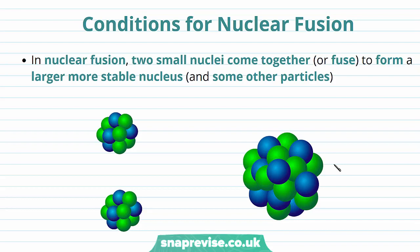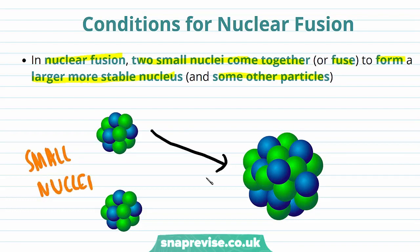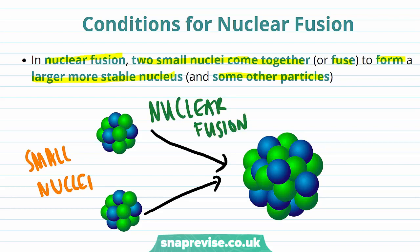The process of nuclear fusion requires certain conditions. In nuclear fusion, two small nuclei come together or fuse to form a larger and more stable nucleus and some other particles.